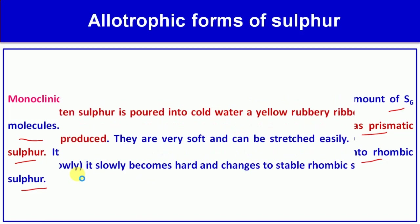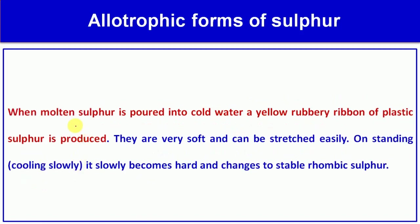When molten sulfur is poured into cold water, a yellow rubbery ribbon of plastic sulfur is produced.